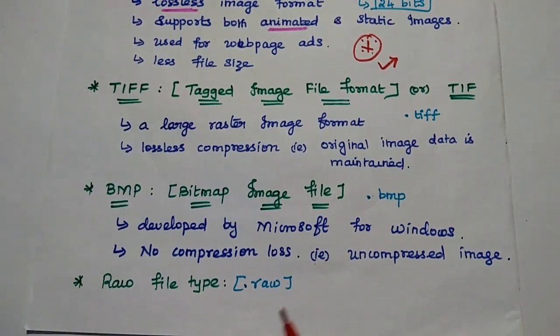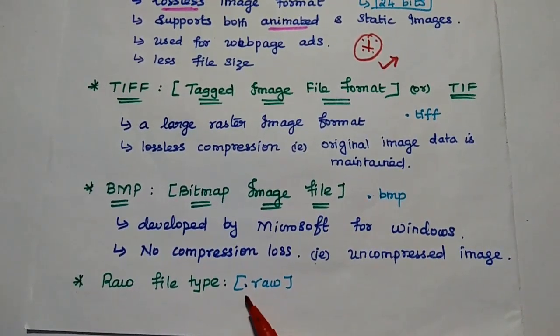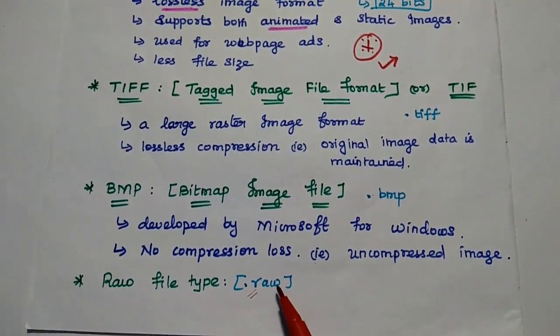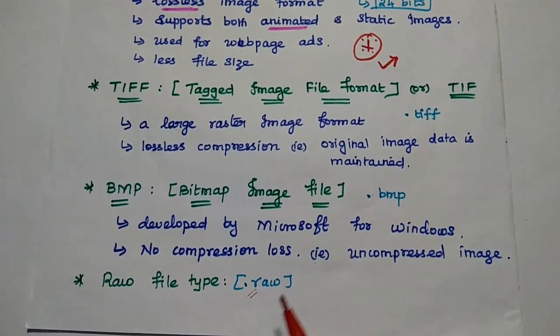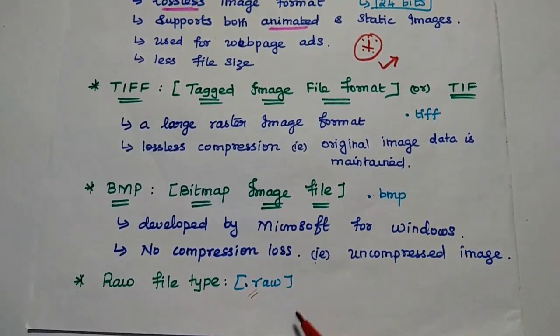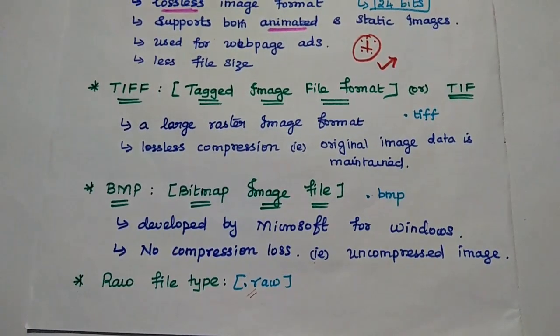And one more file is there, that is the RAW file type. That can be represented as .RAW. It is the RAW file format. Whichever camera sensors we are using, based on that we can get this image.